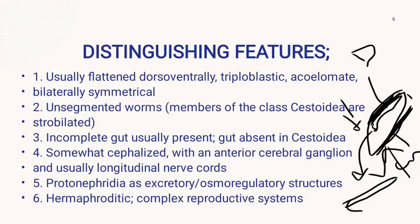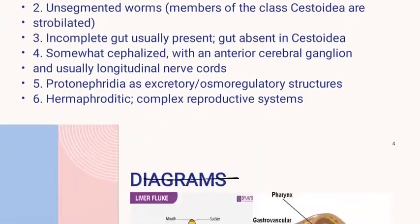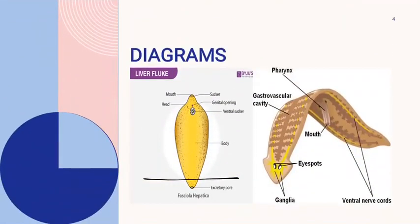The body of Platyhelminthes is free of strobilation, or segments. The gut is incomplete in these animals — as you can see in this diagram, there is a mouth and a gastrovascular cavity but no complete gut. Extracellular digestion happens in these animals.